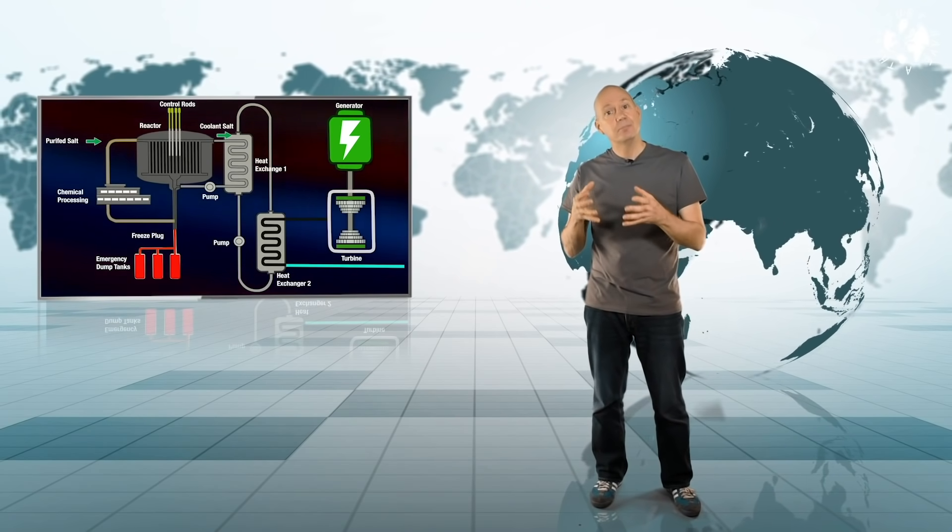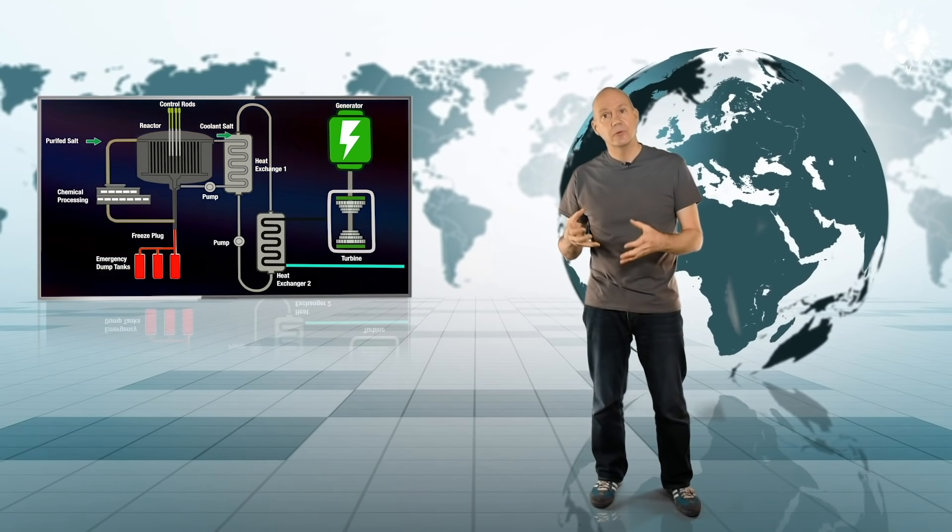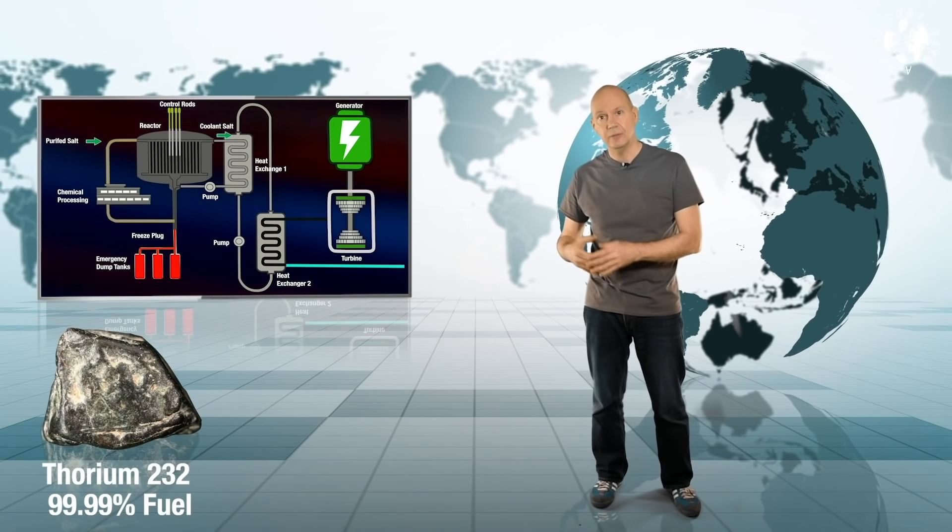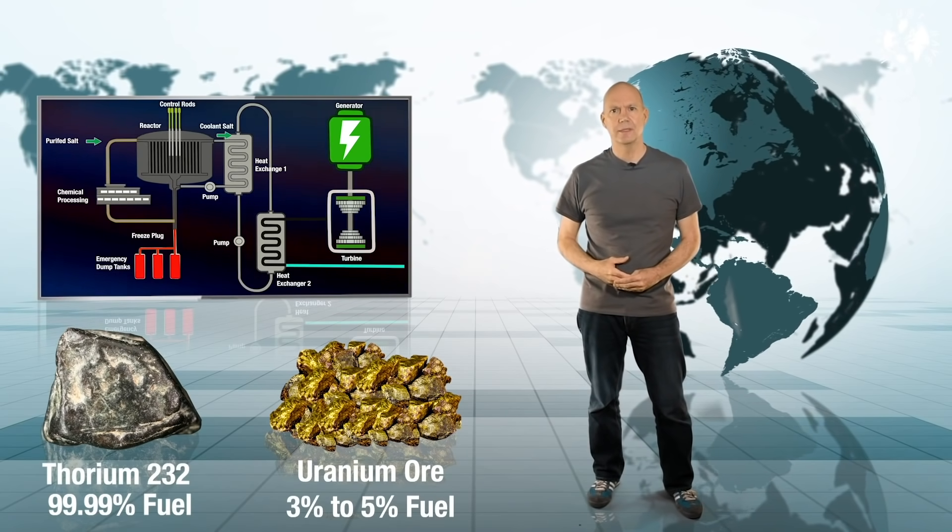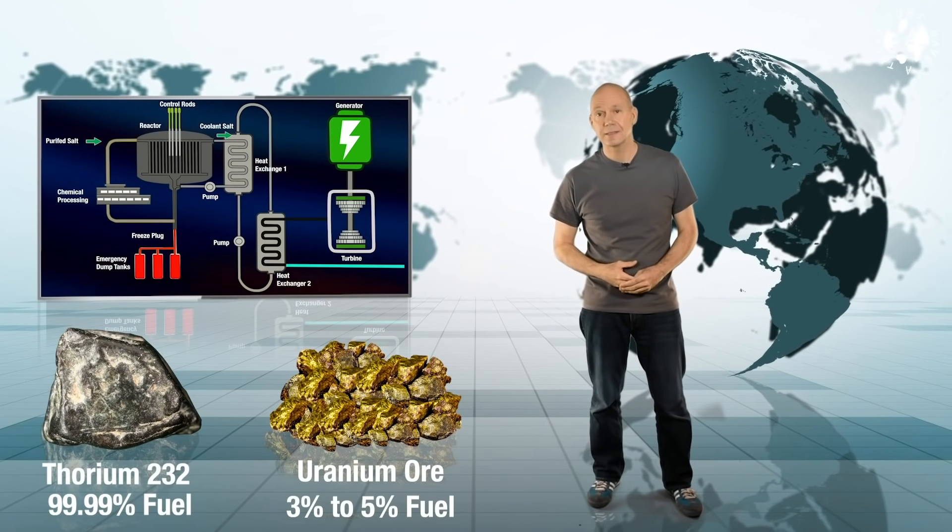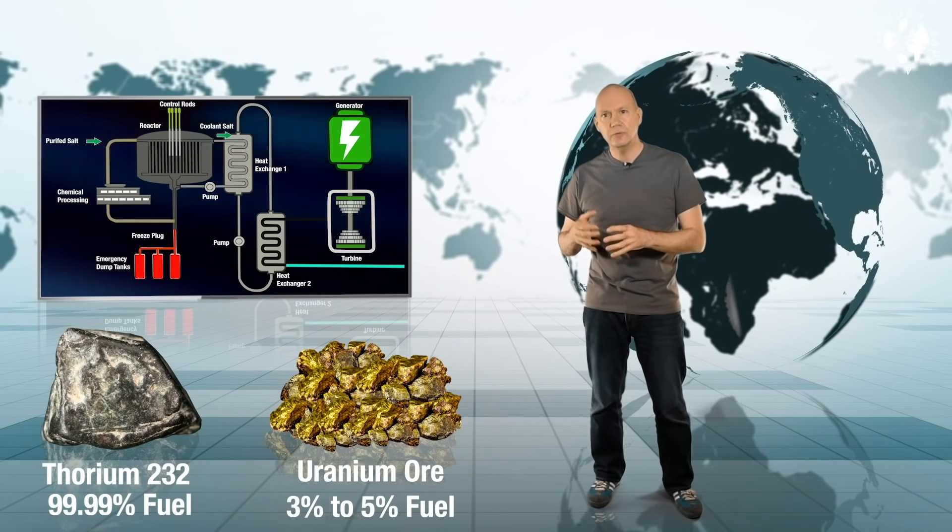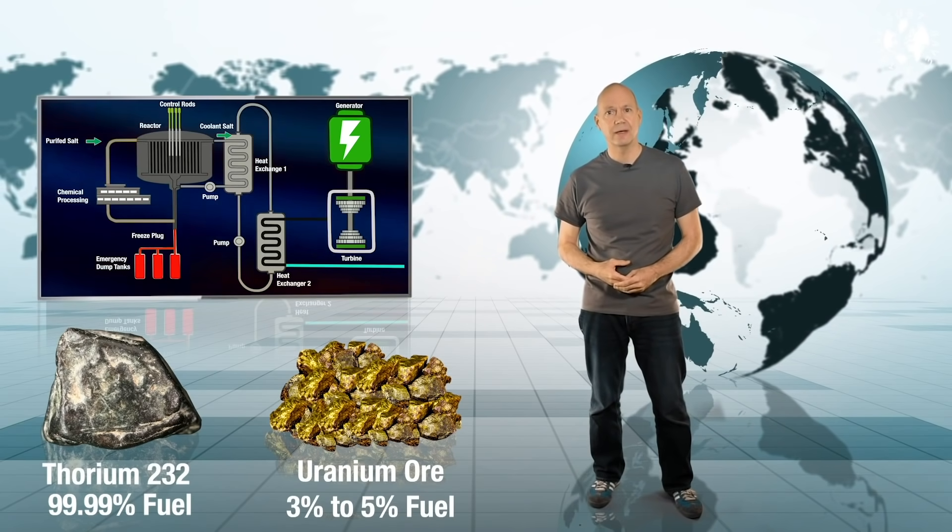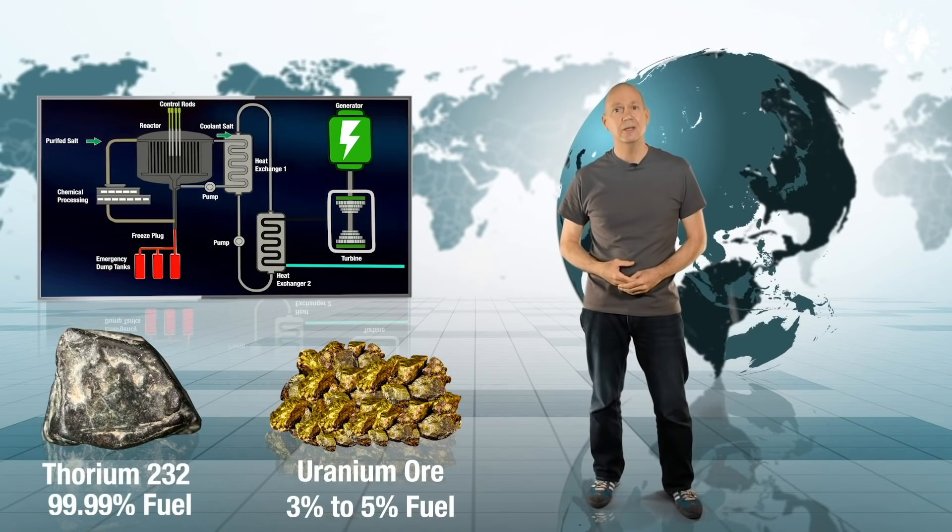And on top of that in its basic form almost all naturally occurring thorium is thorium-232 which is exactly the isotope that can be used in nuclear reactors. Uranium ore only contains three to five percent of useful material which according to the enthusiastic proponents of molten salt reactor technology means that thorium could potentially offer as much as 250 times the overall energy output of uranium and about four million times the energy of coal.